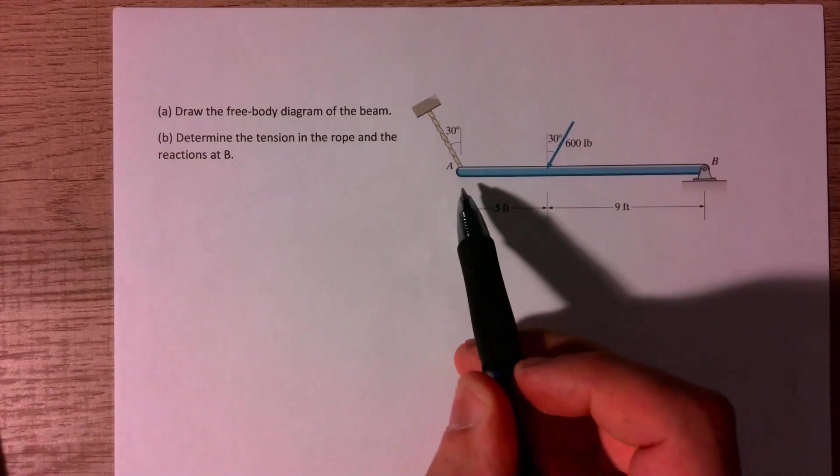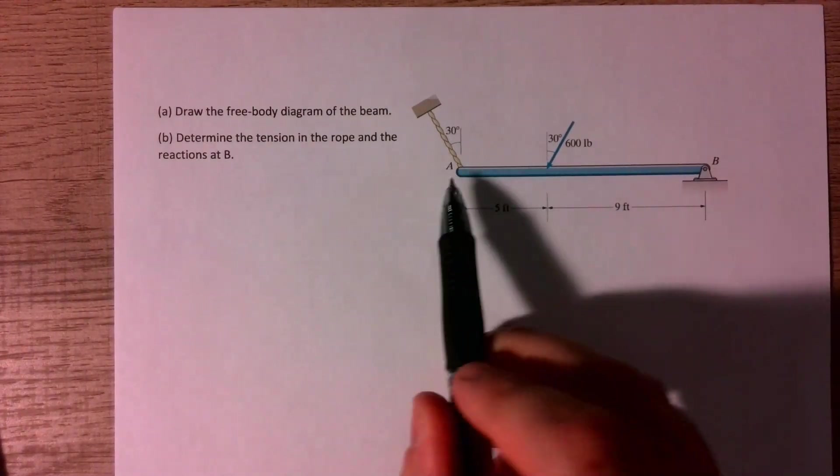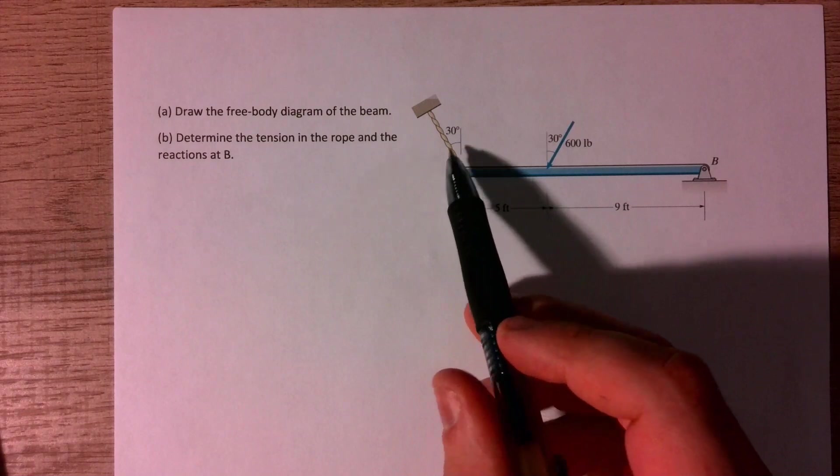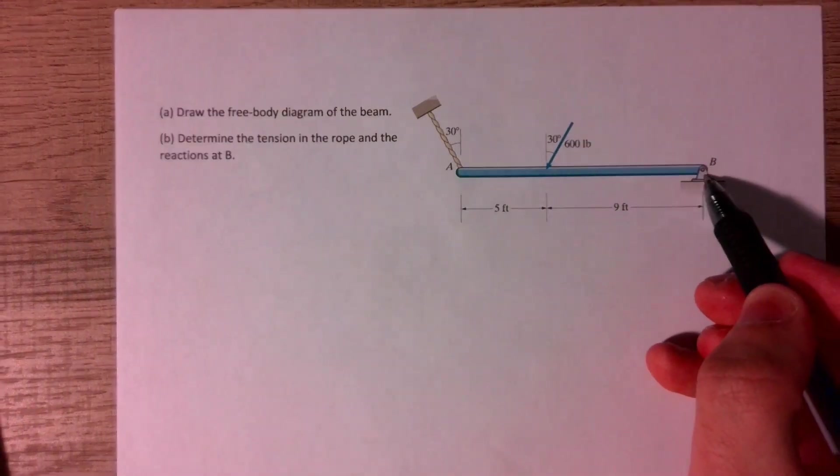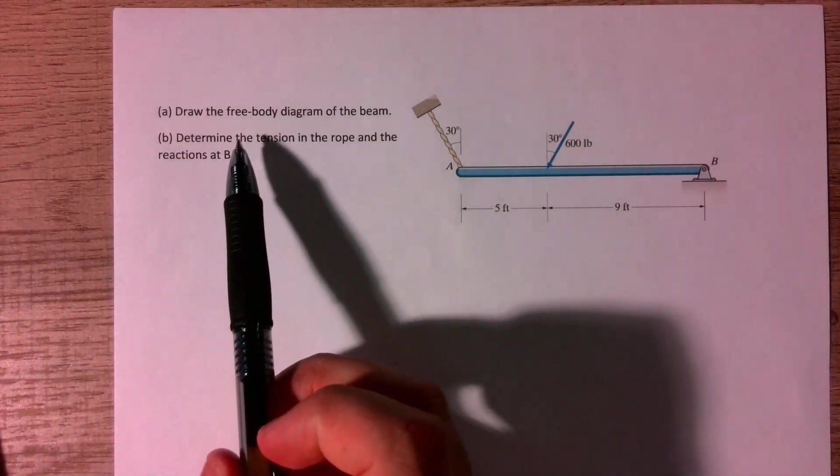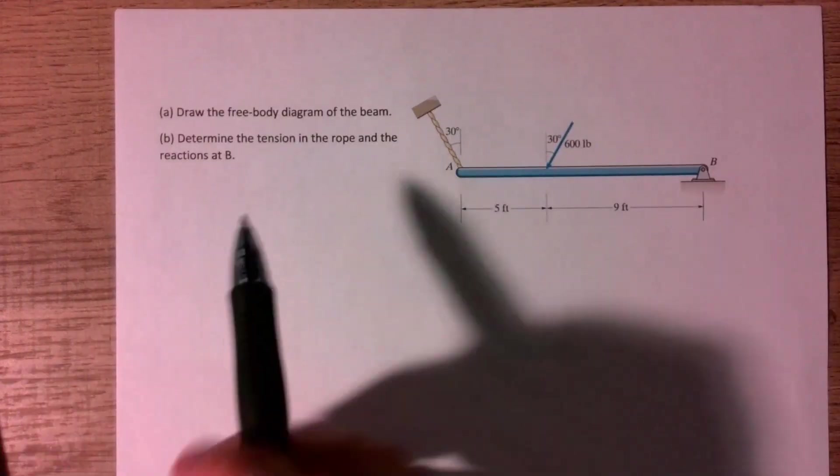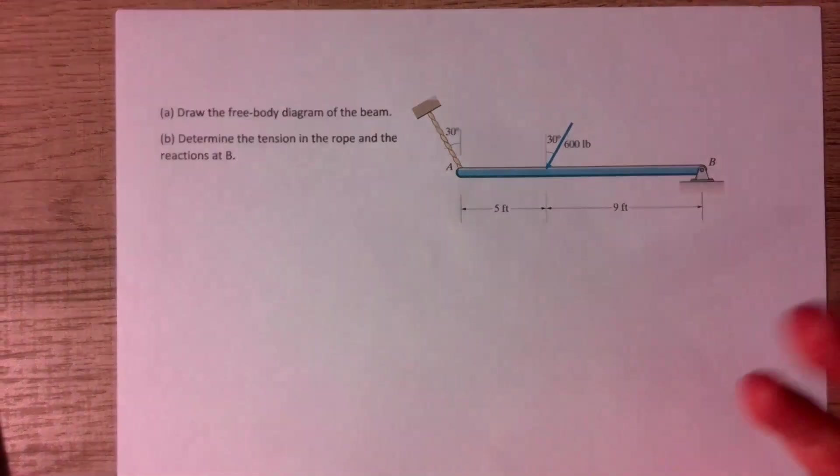Hi everybody! So today we're doing a statics problem. We have this beam with ends A and B. At end A we have a rope pulling the beam at an angle of 30 degrees, and then we have a fixed support over here at point B. So what the problem wants us to do is to draw the free body diagram of the beam, and then determine the tension in the rope and the reaction forces at point B.